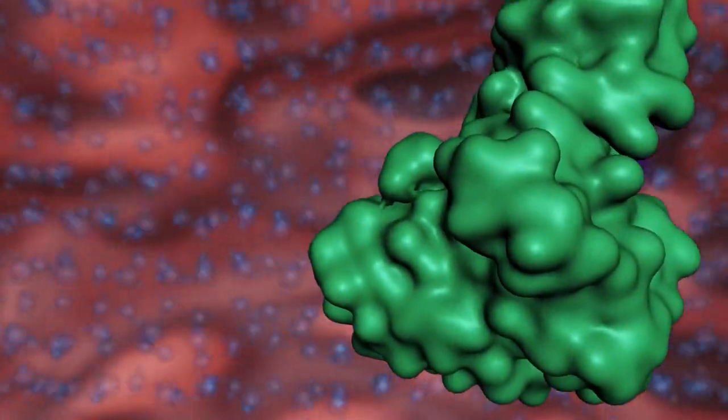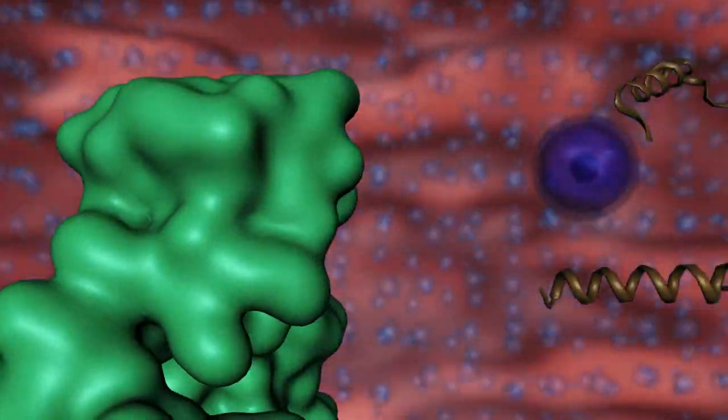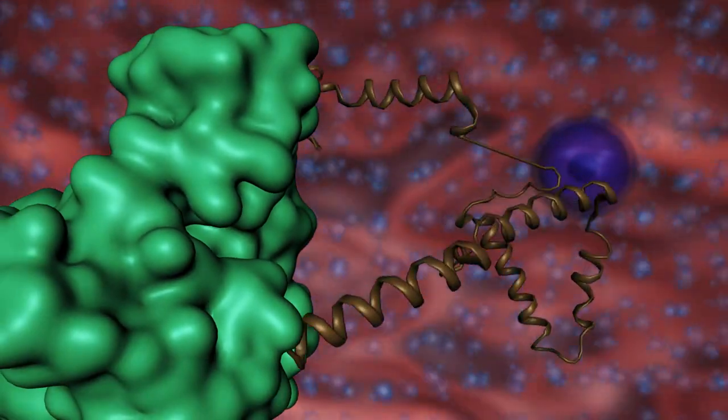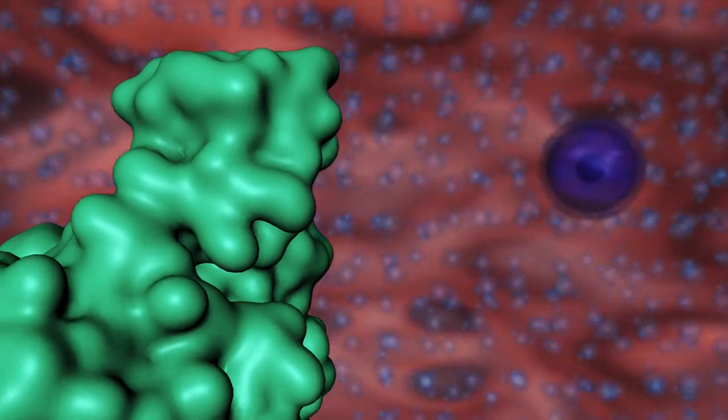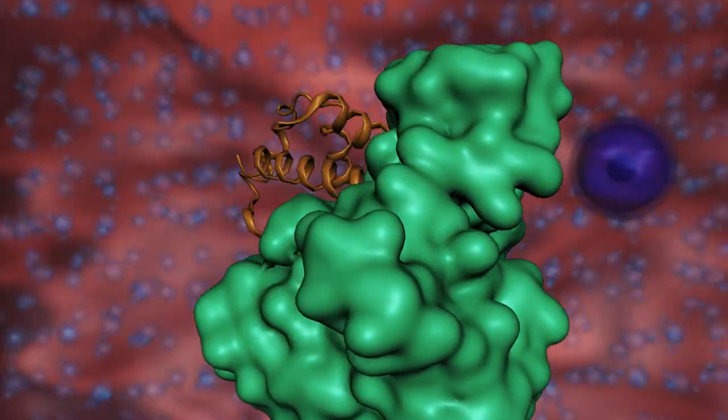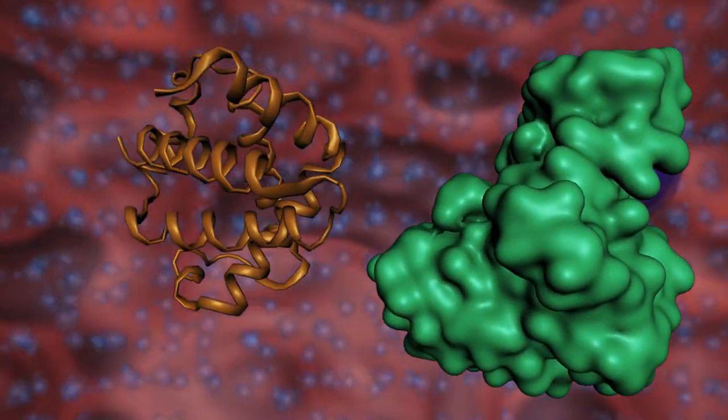Activated heat shock proteins help those unfolded proteins restore their proper shape, in which they can perform expected biological tasks.